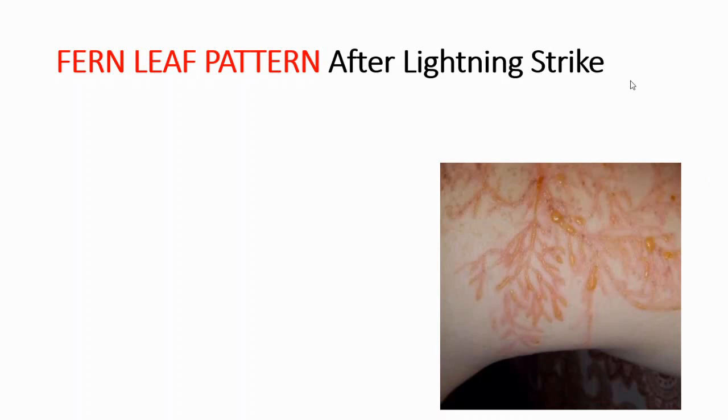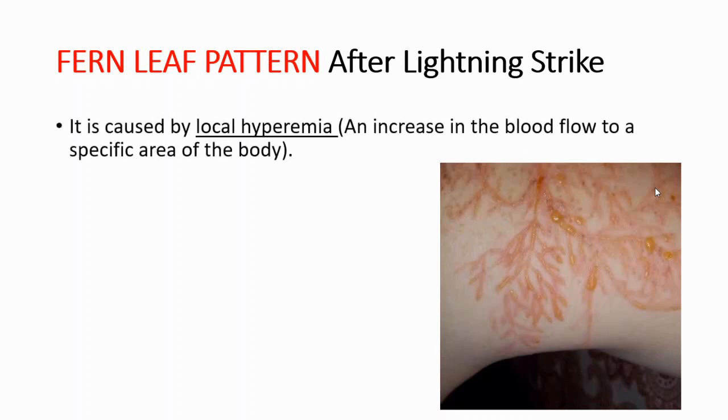Fahrenheit leaf pattern is usually seen after a lightning strike, as you can see from this picture. It is caused by local hyperemia.